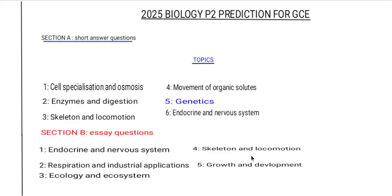The fourth Section B topic is skeleton and locomotion. You should know how to draw and label a diagram of a vertebra, and be able to explain the function of different vertebrae such as the cervical or thoracic vertebrae.